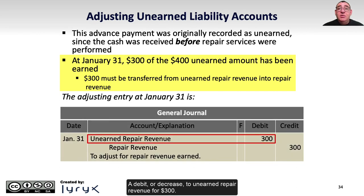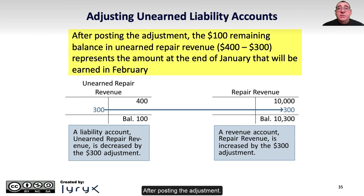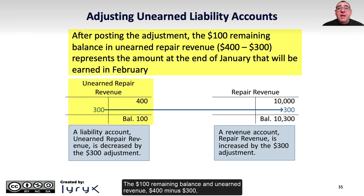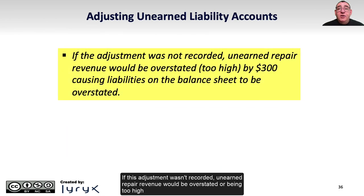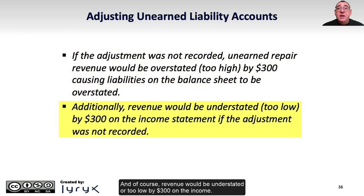The adjusting entry is a debit or decrease to unearned repair revenue for $300, and a corresponding credit or increase to repair revenue on the income statement. After posting, the $100 remaining balance in unearned revenue represents the amount that will be earned in February. If this adjustment wasn't recorded, unearned repair revenue would be overstated by $300, causing liabilities to be overstated on the balance sheet and revenue to be understated by $300 on the income statement.